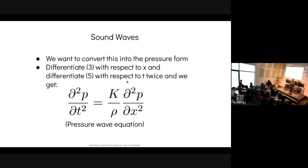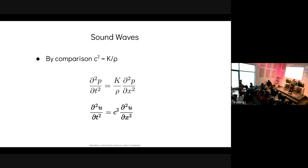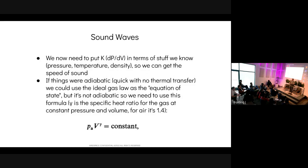Differentiating with respect to x and time, we get a pressure wave equation with the same form and same speed of sound. By comparison, the speed of sound is the square root of the bulk modulus divided by density. Our remaining problem is expressing the bulk modulus in terms of real quantities like pressure, temperature, and density, so we can think about sound more qualitatively.